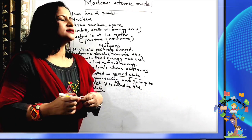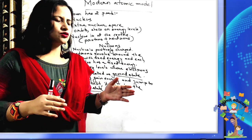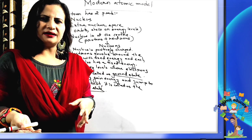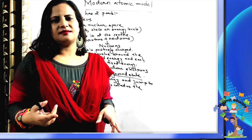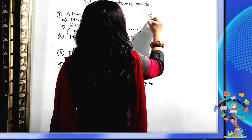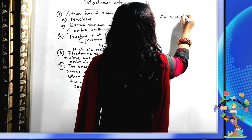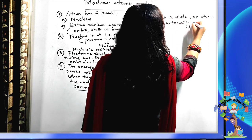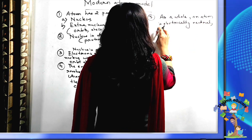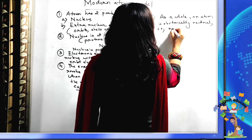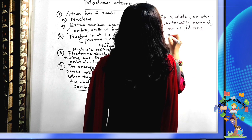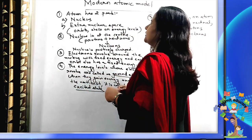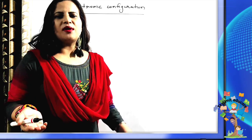Normally when an electron is revolving around the nucleus, that is called the ground state. But when external energy is applied, the electron jumps to the next orbit and is said to be in the excited state. As a whole, an atom is electrically neutral, because the number of protons is equal to the number of electrons.